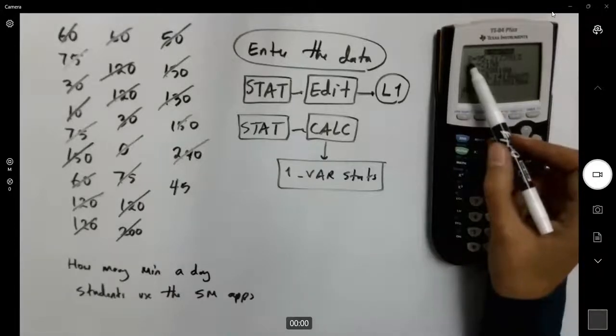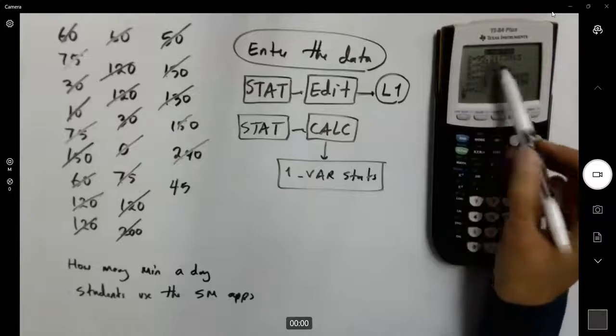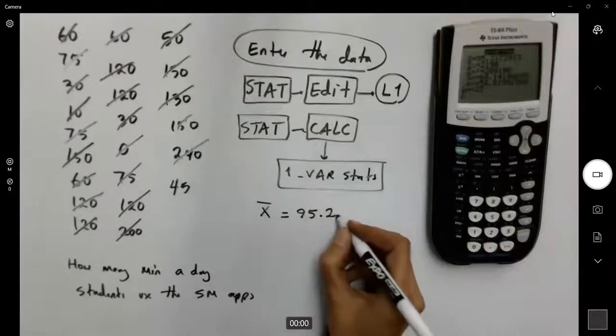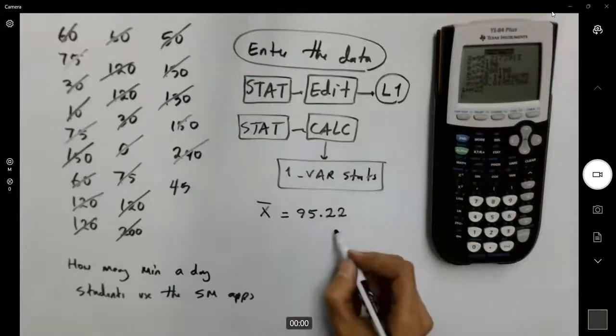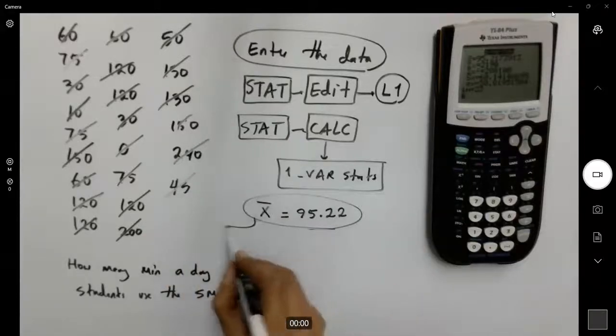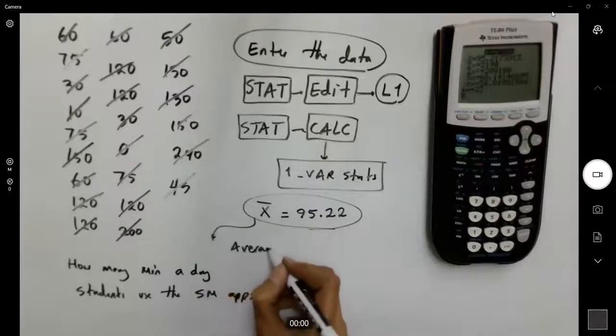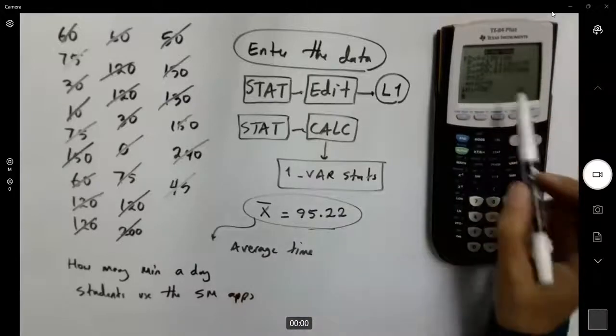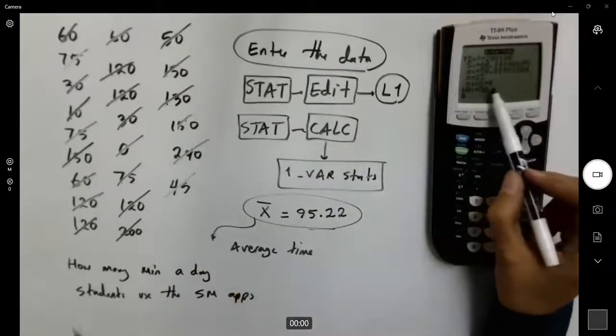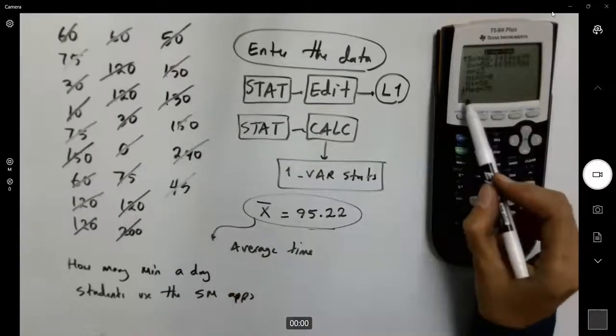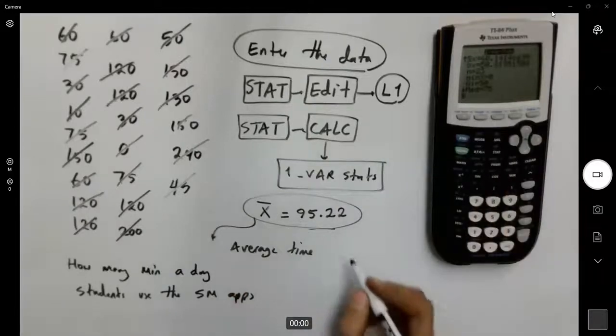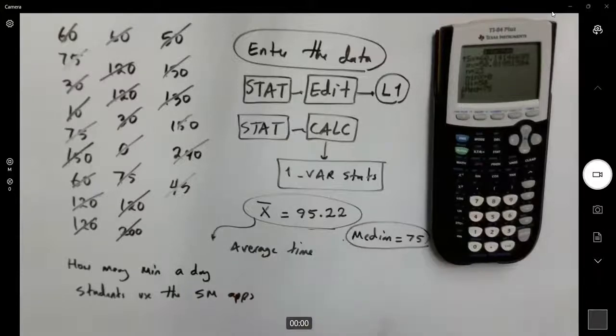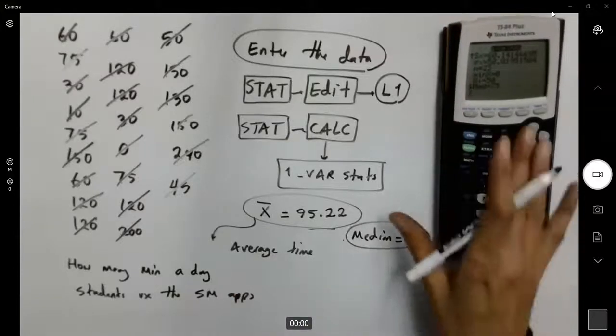For example, you need x bar as the average. X bar, the average is 95.22, 95 minutes is the average. If you go further down, you see the minimum value, which is zero. Then you have the median, which is 75. So the median is 75.